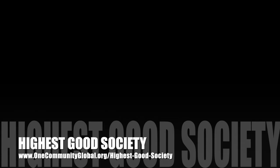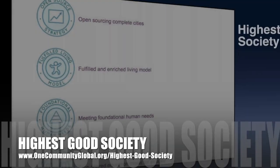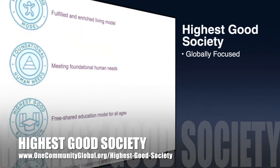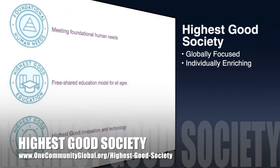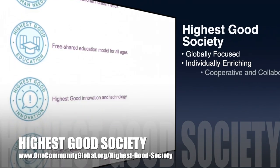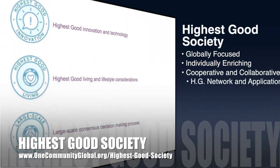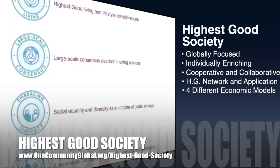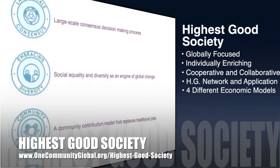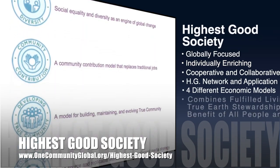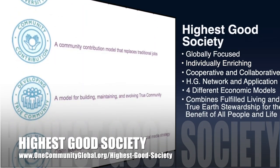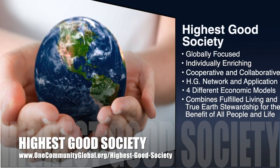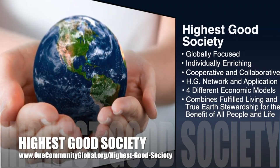The One Community approach to Highest Good Society is globally focused, individually enriching, cooperative and collaborative, includes a Highest Good network and application, four different economic models, and combines fulfilled living and true earth stewardship for the benefit of all people and all life on this planet.